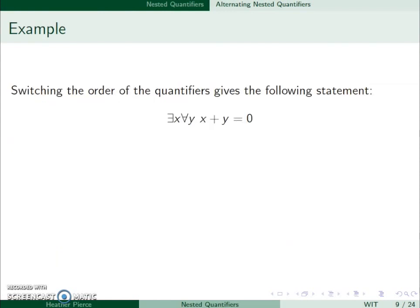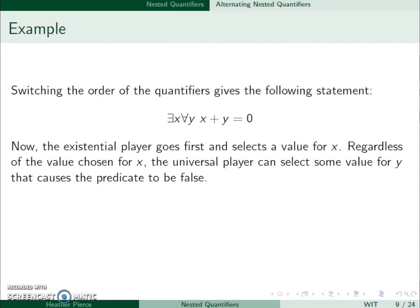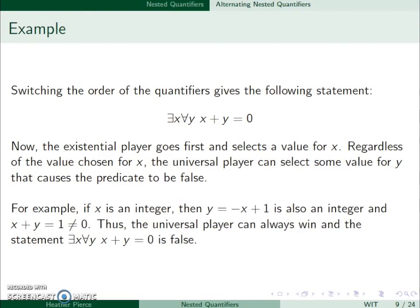Now let's switch the order. Since the existential comes first, the existential player would go first. They'll select a value for x. And regardless of what they choose, the universal player can find some value of y that causes it to be false. Since we have to pick x first, the universal player can determine a false value. For example, if x is an integer, then y=-x+1 is also an integer, and x+y=1, which is not 0. So the universal player can always win, and this statement will always be false.